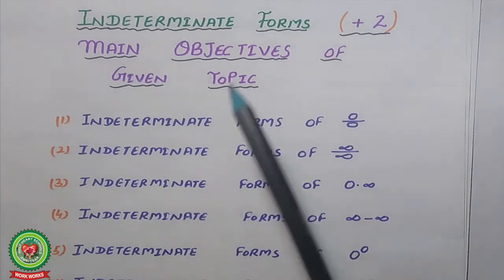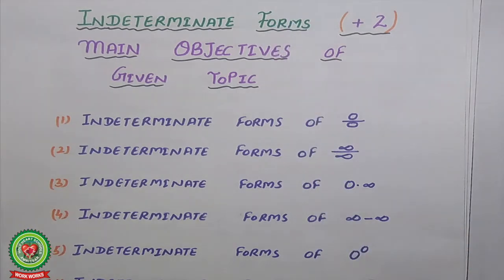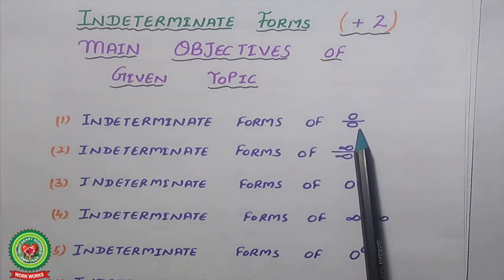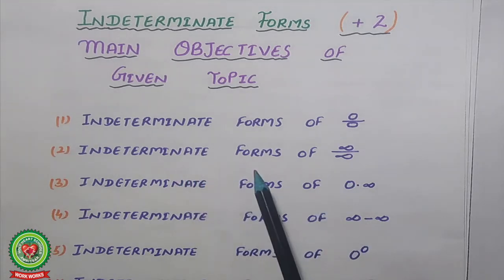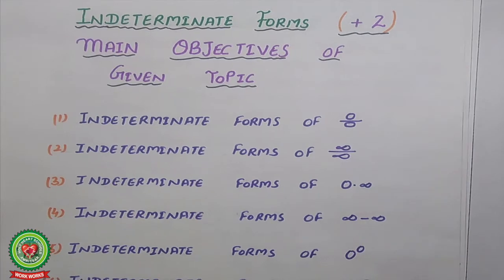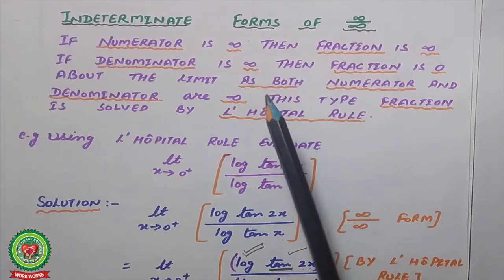Hello students, good morning. We have already started the topic of indeterminate forms. In our previous lecture, we discussed seven indeterminate forms and solved the zero by zero form. In continuation of that topic, today we will discuss another indeterminate form: the infinity by infinity form.